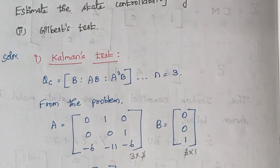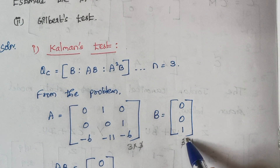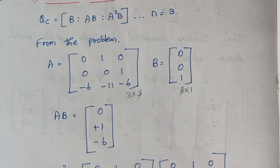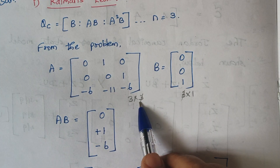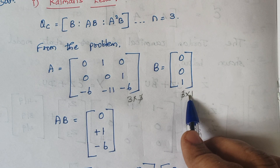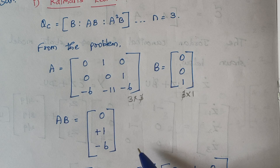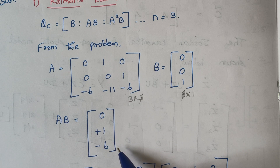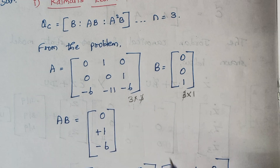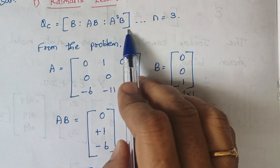From the problem we know A and B. First we calculate AB. Since A is a 3×3 matrix and B is a 3×1 matrix, the final answer should be a 3×1 matrix. We have now calculated AB.